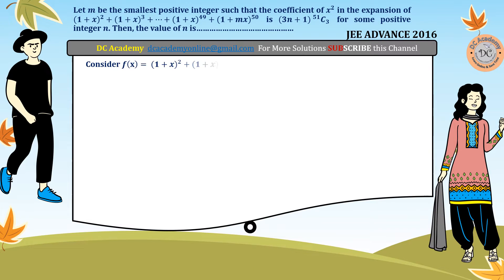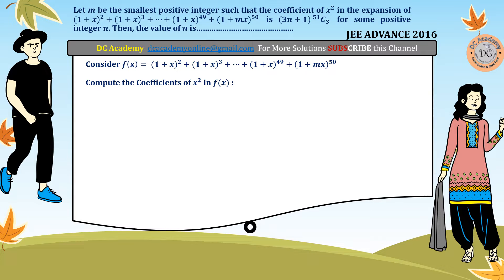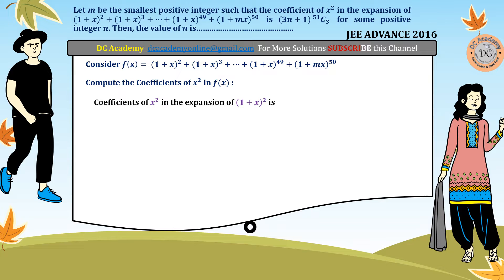First, we consider the expansion and find the coefficient of x². The coefficient of x² in f(x) will be the sum of the coefficients of x² in each individual term — (1+x)², (1+x)³, and all those terms separately — which we then add together.